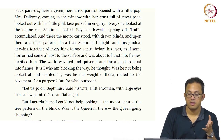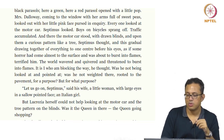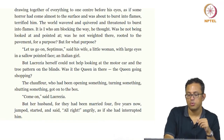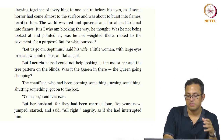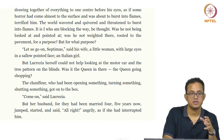Her name is Lucresia. 'But Lucresia herself could not help looking at the motor car on the tree pattern on the blinds. Was it the queen in there, the queen going shopping? The chauffeur got onto the box. Come on, said Lucresia. But her husband, for they had been married four or five years now, jumped, started, and said oh angrily as if she had interrupted him.' This very jumpy, edgy quality about Septimus is interesting because his entire cognitive and nervous system is informed by fragility.